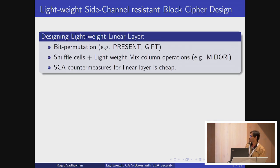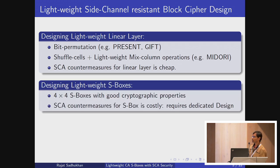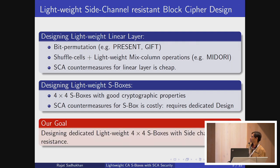Looking at some lightweight block ciphers, we have PRESENT, GIFT, or Midori, which follow a linear layer that is very lightweight, using bit permutation or almost MDS and shuffle cells. For SCA countermeasures, the linear layer is much cheaper, but when it comes to the nonlinear layer for S-boxes, it becomes heavy, especially for making it side-channel resistant.